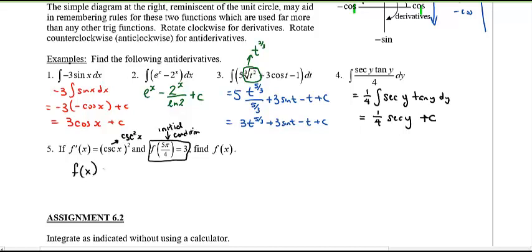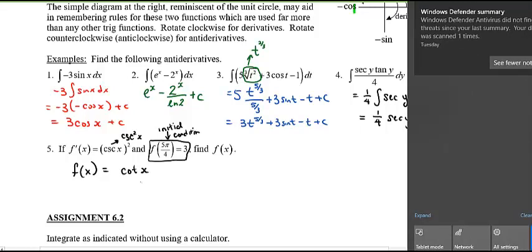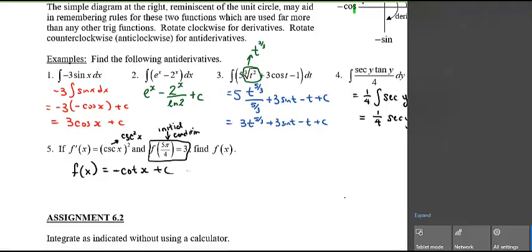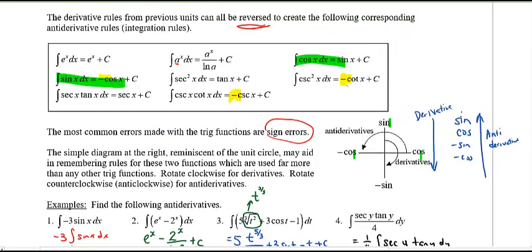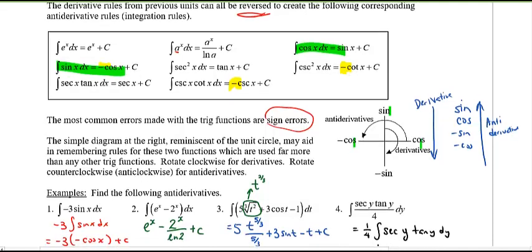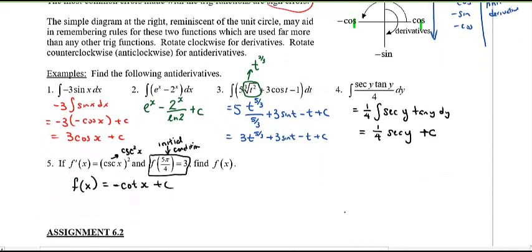Hopefully you remember that's just cotangent, and remember this is the one where it's negative. Why is it negative? Why is it negative? Yeah, because it starts with the C. And then now you just have to apply this and plug in the initial condition.